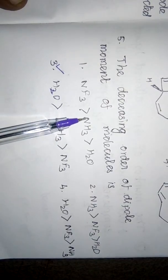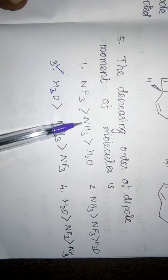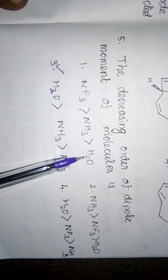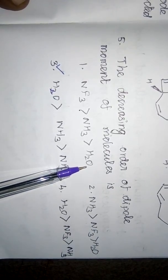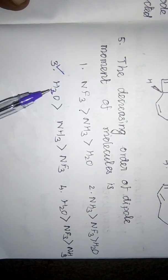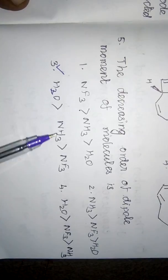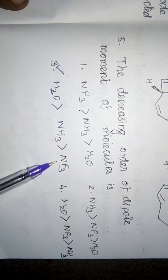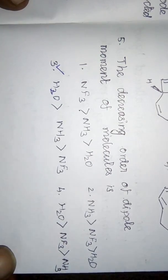In NH3, the three hydrogen atoms' bond moments are in one direction opposite to that of the nitrogen, so NH3 has a higher dipole moment than NF3. In H2O, there are two hydrogens and oxygen is more electronegative, so H2O has the most dipole moment. Therefore: H2O > NH3 > NF3.